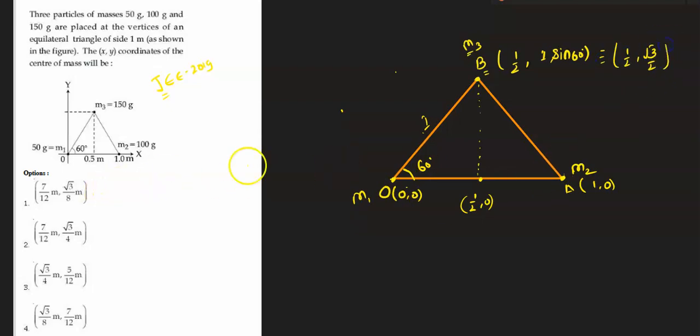Now for finding center of mass, I can apply xcm equals m1·x1 plus m2·x2 plus m3·x3 divided by summation of the masses m1 plus m2 plus m3.